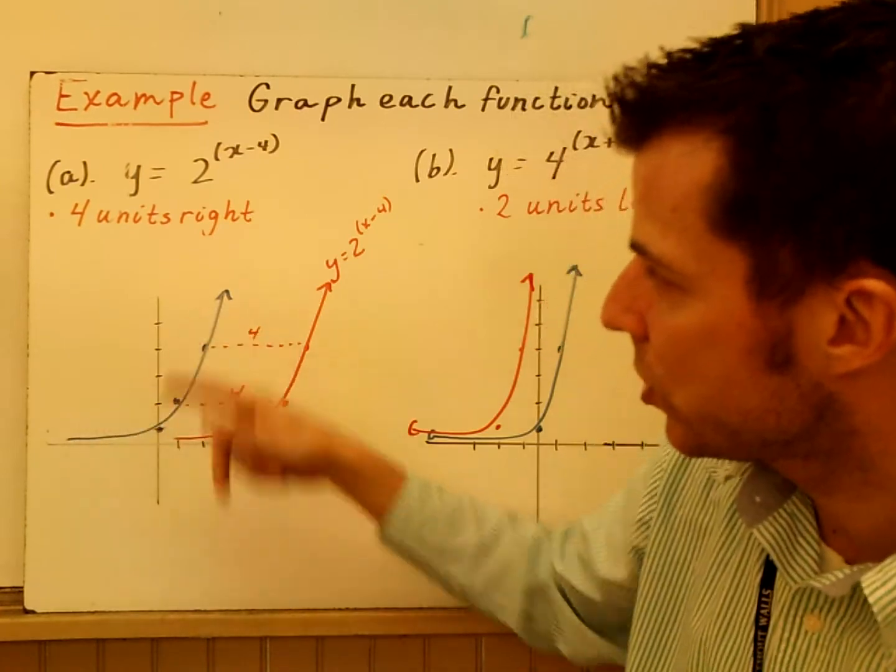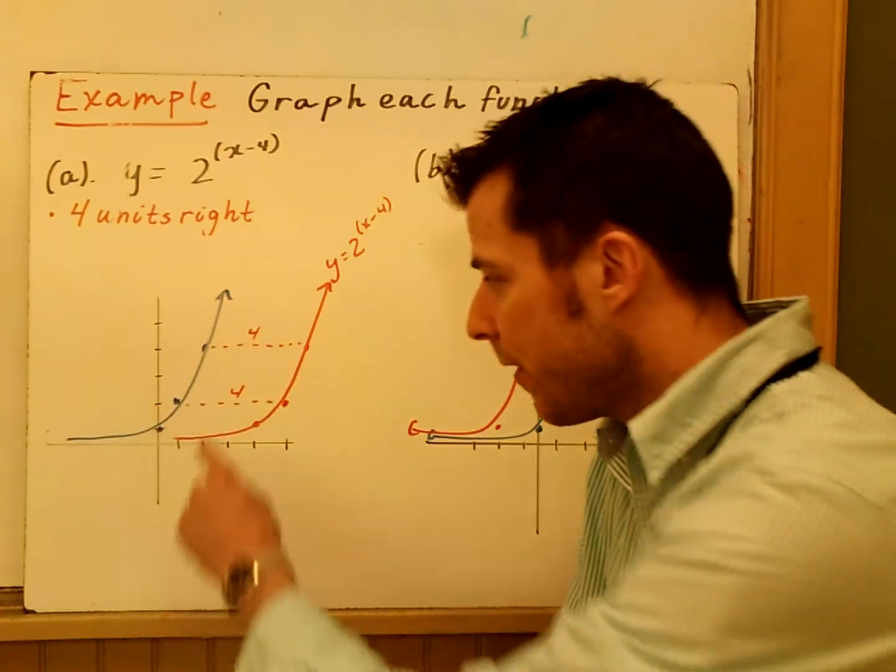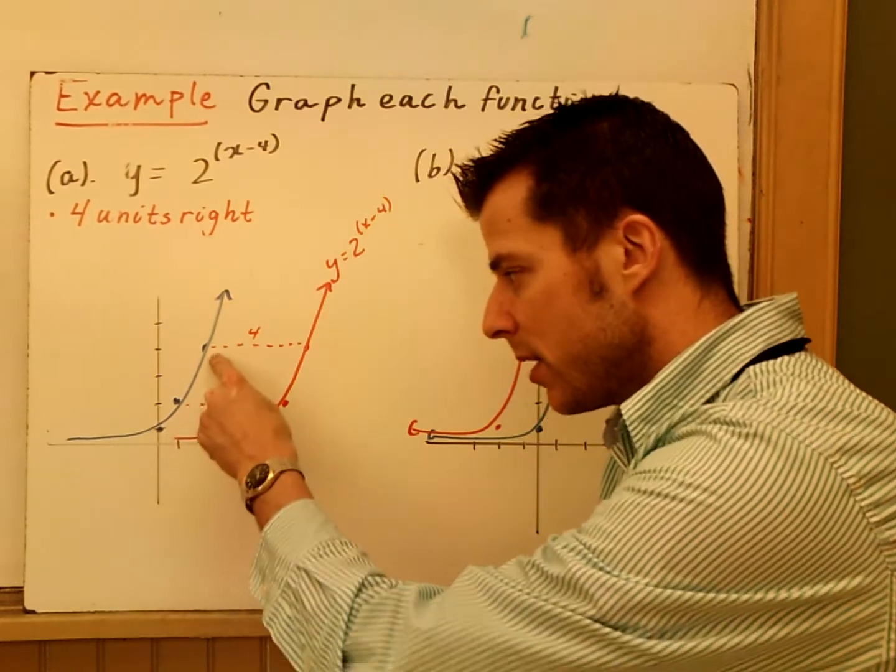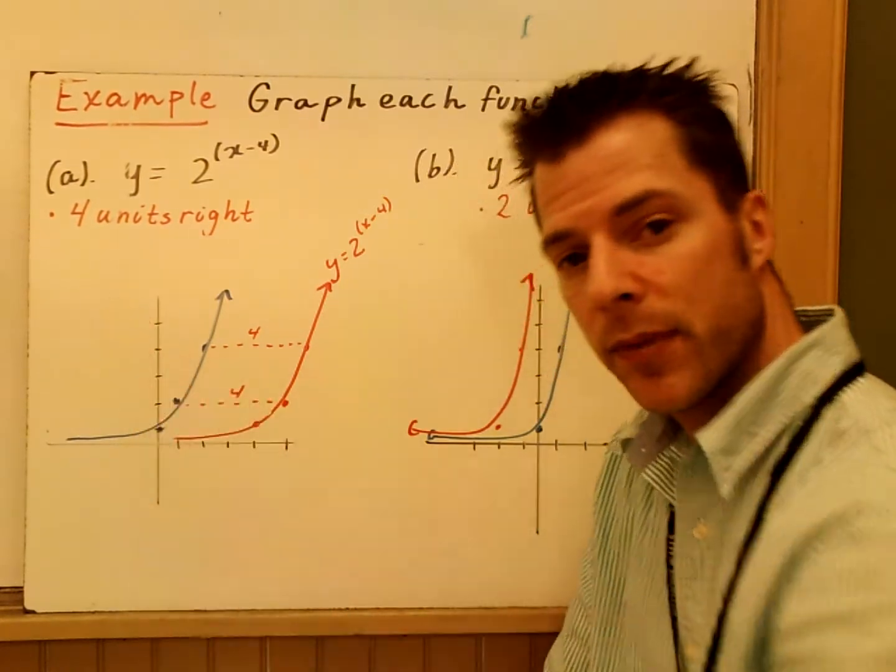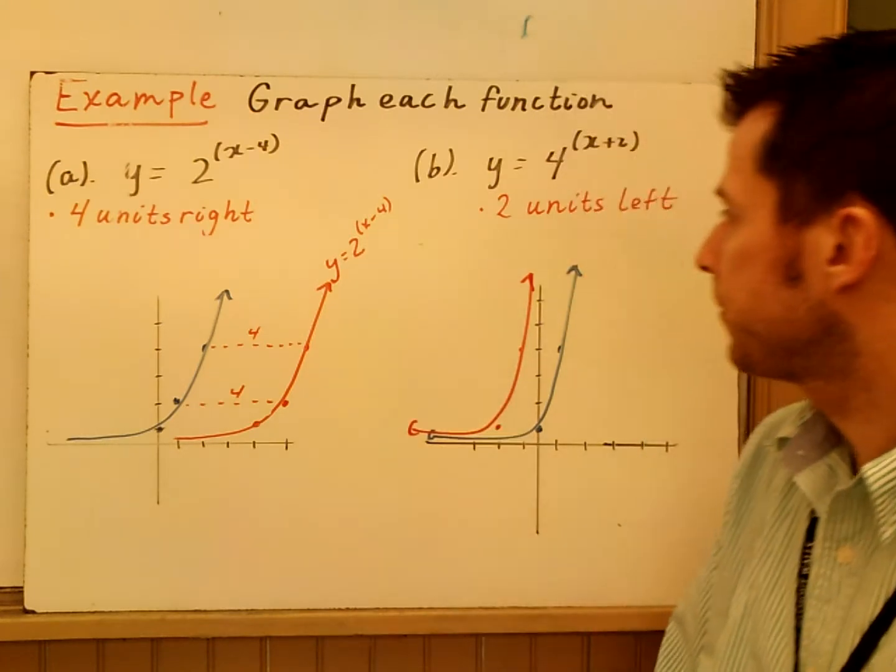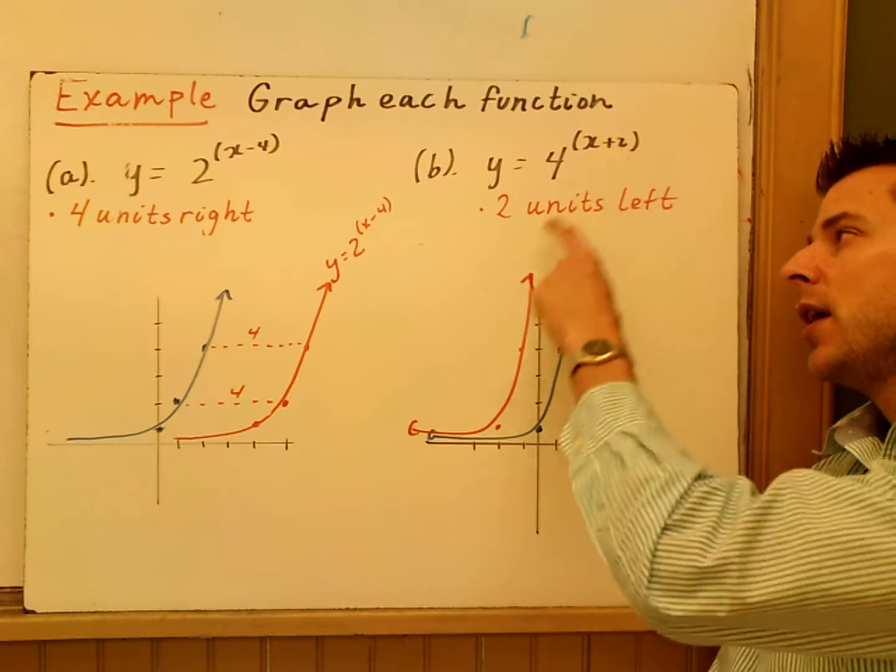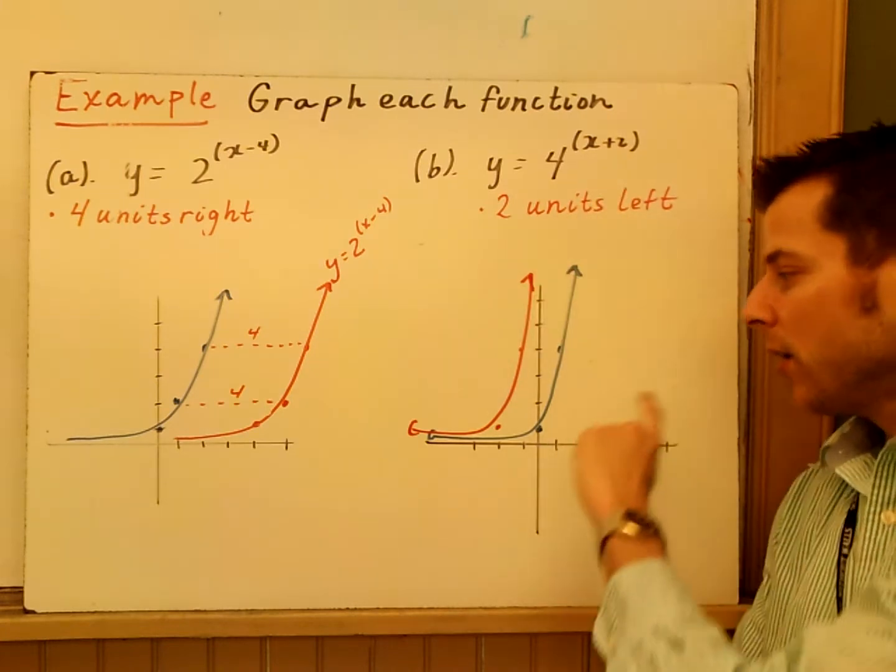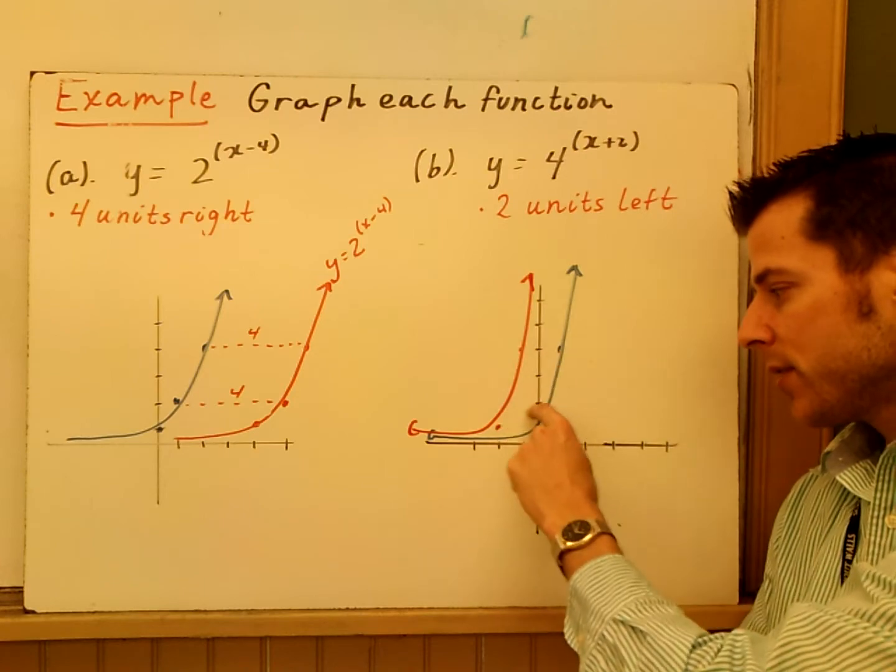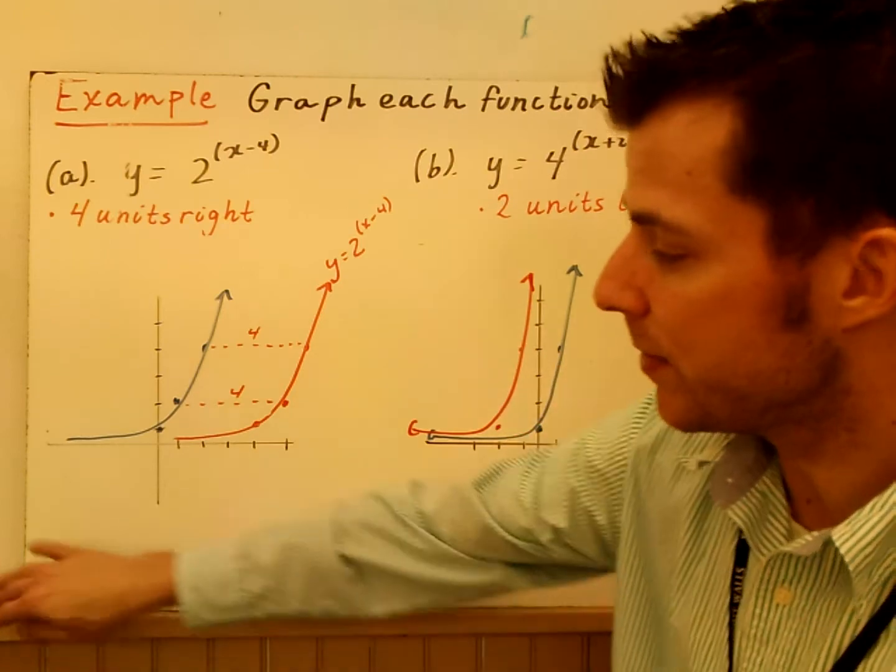So I plot Y equals 2 to the X, that's the parent function, and I move all my points 4 to the right. I plot 3 points here, and I just moved them to the right. There's my graph, Y equals 2 to the X minus 4, very simple. Here, 4 to the X plus 2, I'm moving 2 units left. So I graph the parent function in blue and move all those points to the left, and then I'm done.